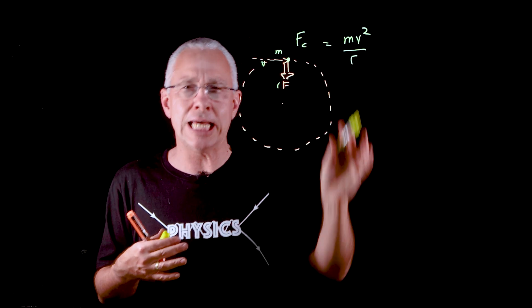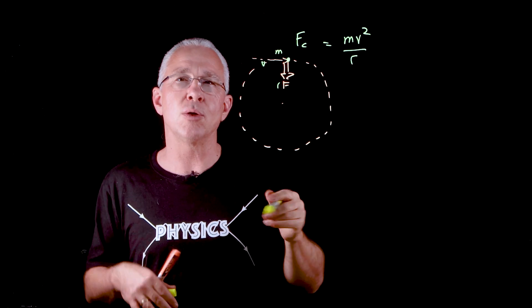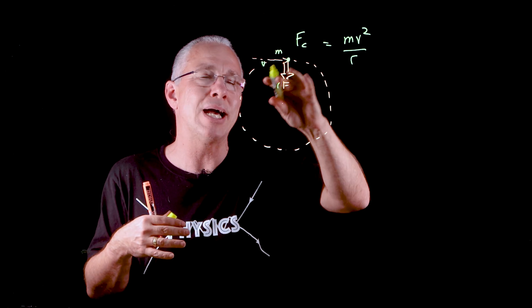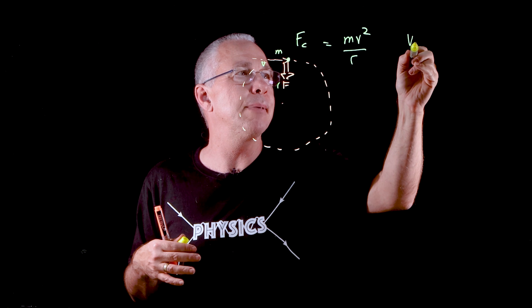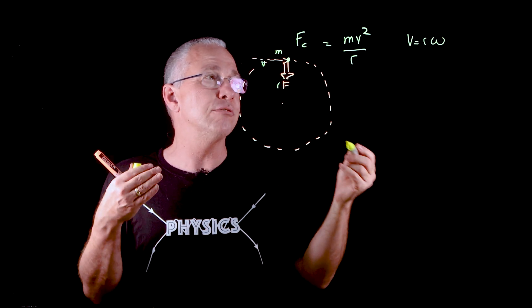Because we are travelling in a circle, often we don't use linear notation such as V. So what we use is the concept of angular velocity, which is about the rotation around an angle. Mathematically, that becomes V equals R omega, where omega is the rate of change of angle.